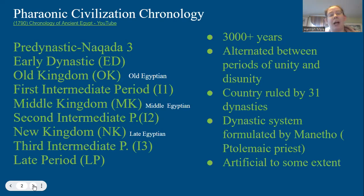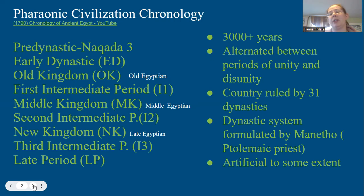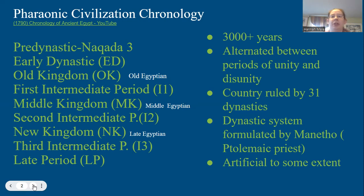The first large topic I'm going to go over is a summary of Egyptian chronology, particularly for what is called the Pharaonic period — basically when Egypt is in its Neolithic period, through when it's an independent state.